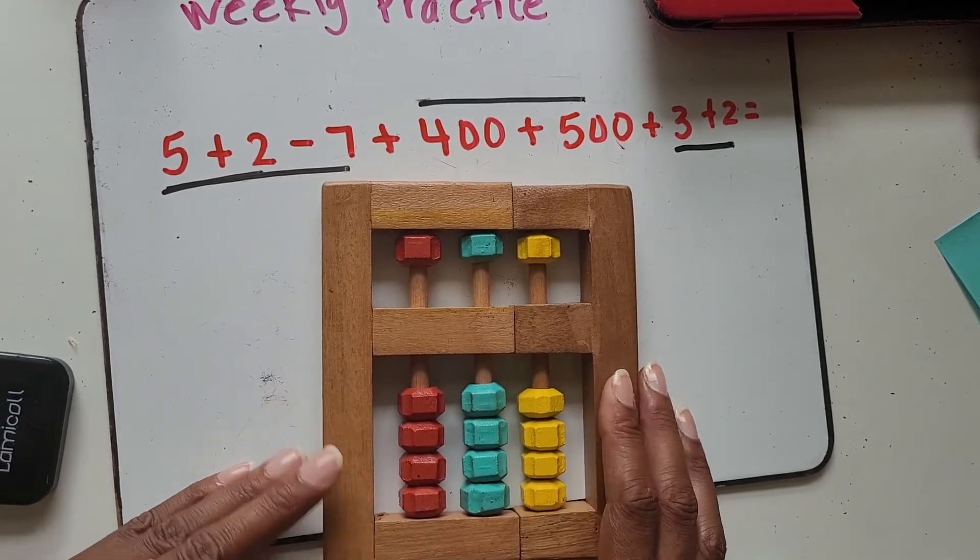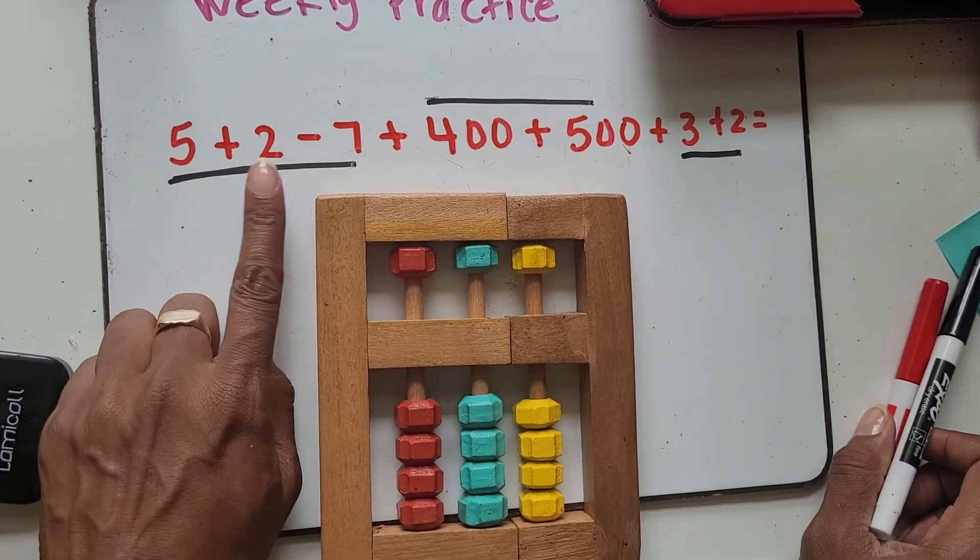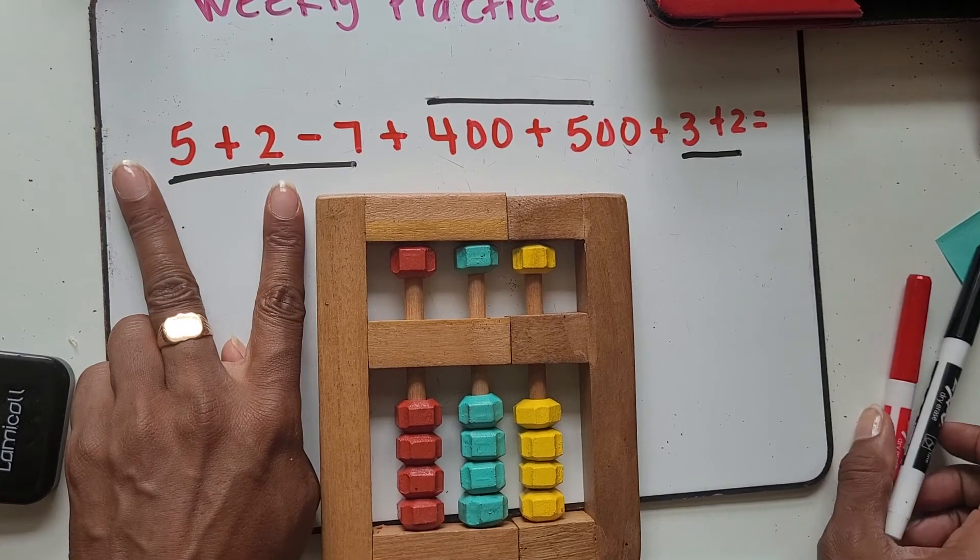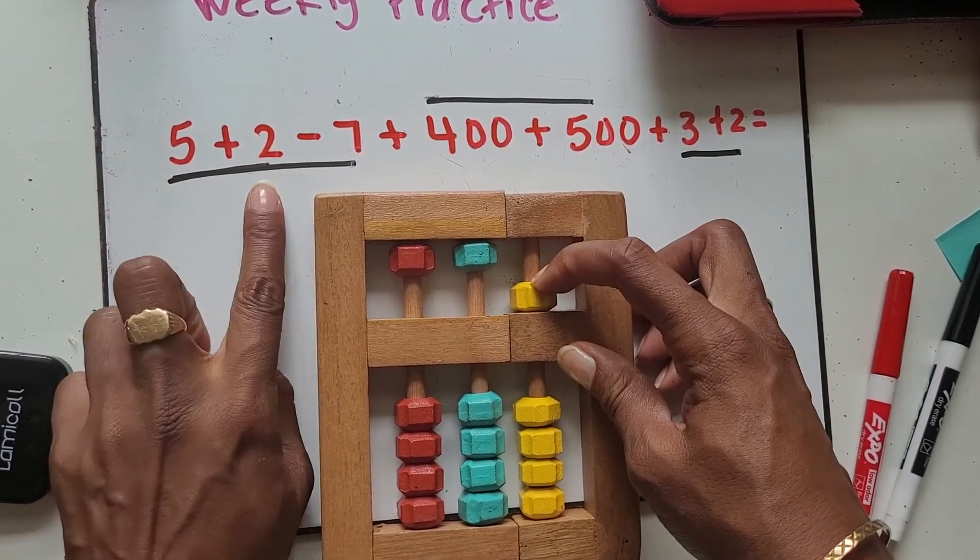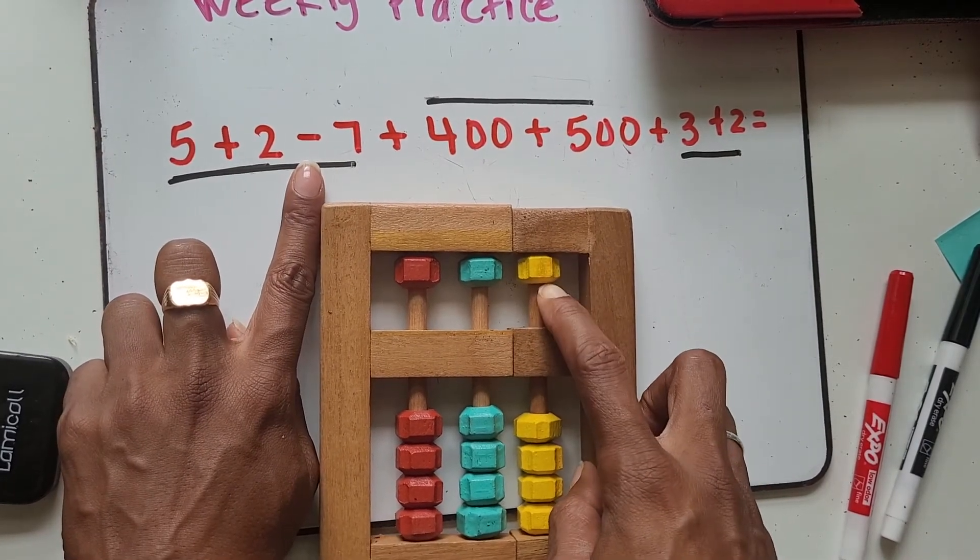Woo! This is really easy. Trust me. It's easy. It's just long. But, it's fun. Alright. So, I look at my numbers. I see that these are on the one rod. So, I'll add my five. I add my two. Take away seven. What? Back to zero.